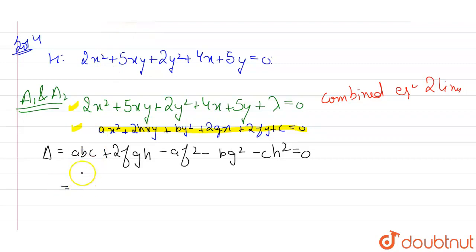Our A will become, the value of A will be what? 2. This will become 2. A is 2, B is 2 and C is lambda.